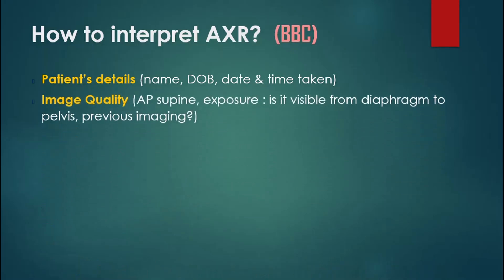The most common projection is normally AP supine view, so you want to mention that. Then you talk about exposure — can you see from the diaphragm to the pelvis? If yes, it is a well-exposed or adequate film. If there is any previous imaging for comparison, you want to mention that in your report as well.